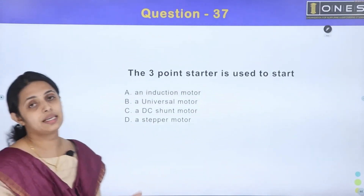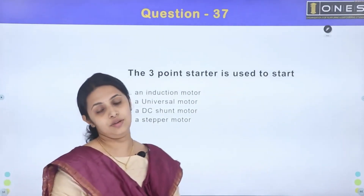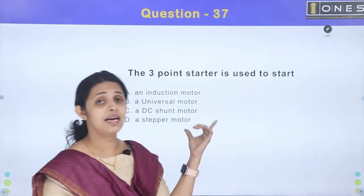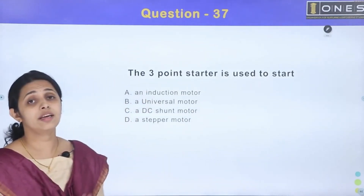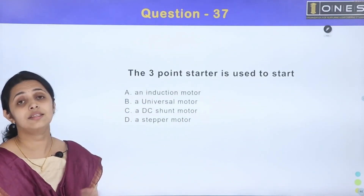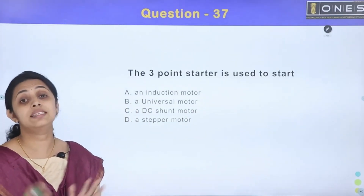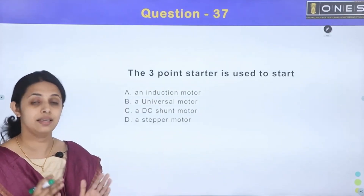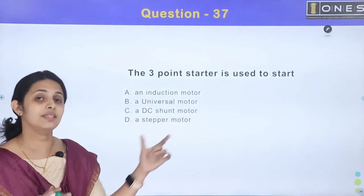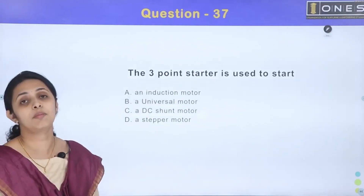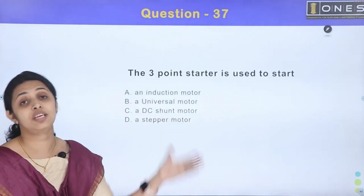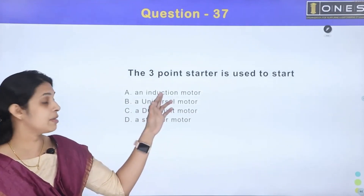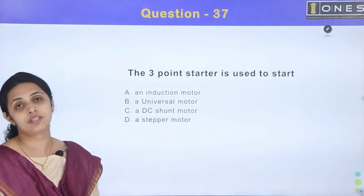The 3-point and 4-point starters are used with DC machines. Specifically, they are used with DC shunt machines.